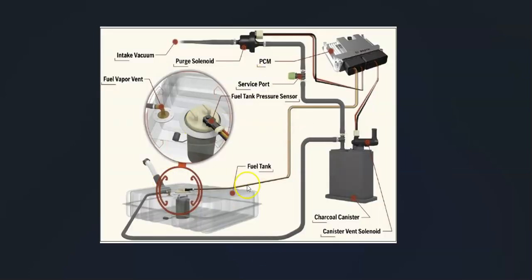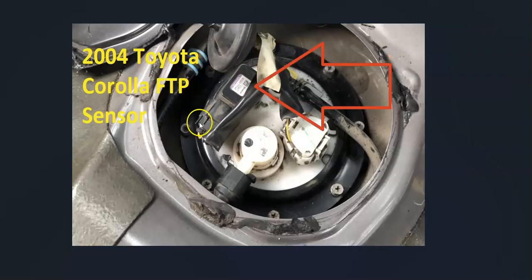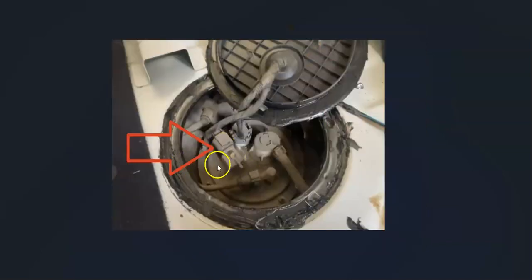If you've checked everything else and it all looks good, the only thing really left is the fuel tank pressure sensor. It may have failed and there might not actually be a problem with the system, but the onboard computer thinks there is because the sensor is sending out bad data. Go test or replace that fuel tank pressure sensor — it's usually located on the fuel pump, though it can be in different locations.